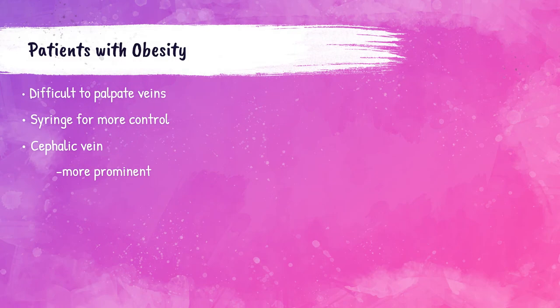When a patient is severely obese, it may be more difficult to locate a vein. A syringe is usually the best method for the venipuncture procedure on an obese patient, as it gives the phlebotomist a little more control. The cephalic vein in the arm is often more prominent in cases like this, so it is commonly used for venipuncture procedures in obese patients.